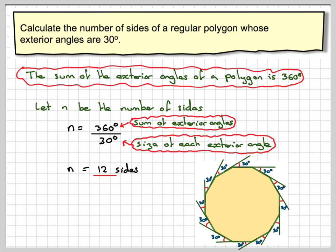And here's a diagram to show you that. Okay, so look, all these angles, if you add them all up, will add up to 360 degrees, and as each one is 30, 30 goes in 12 times.